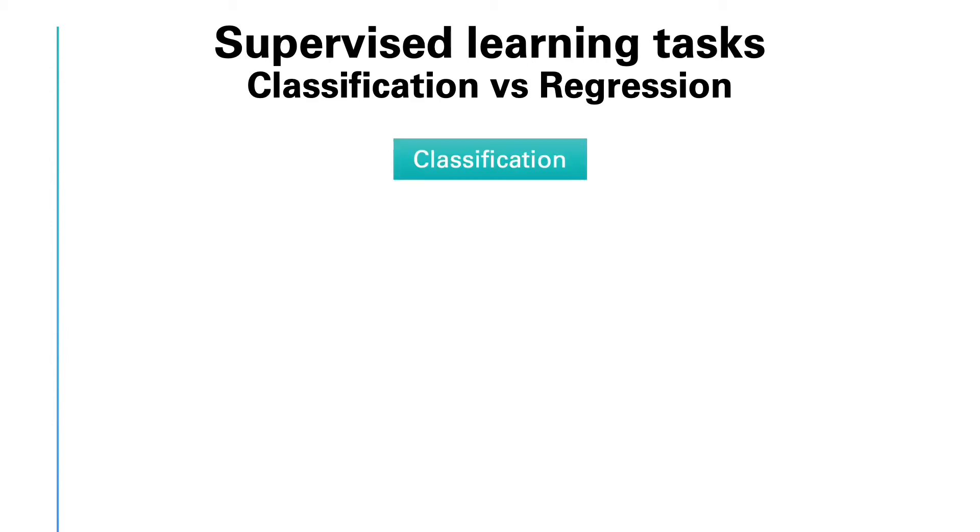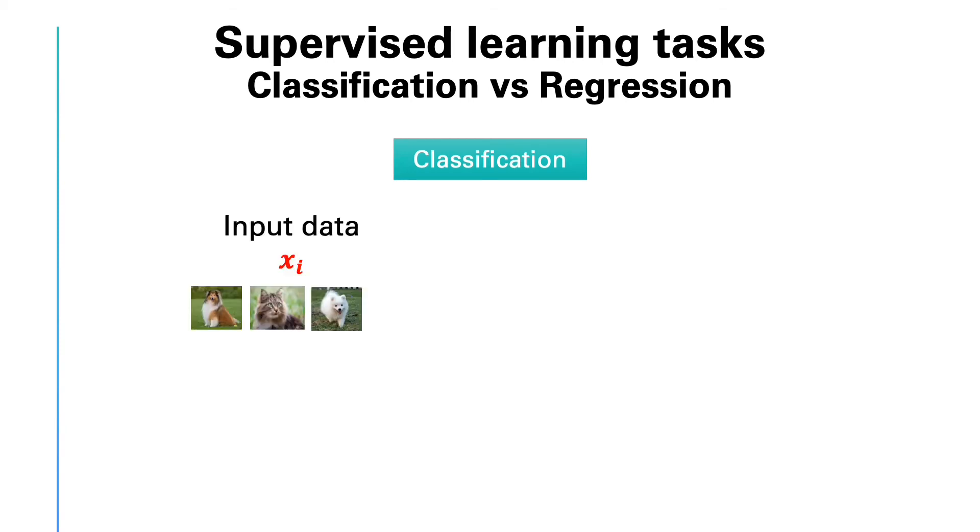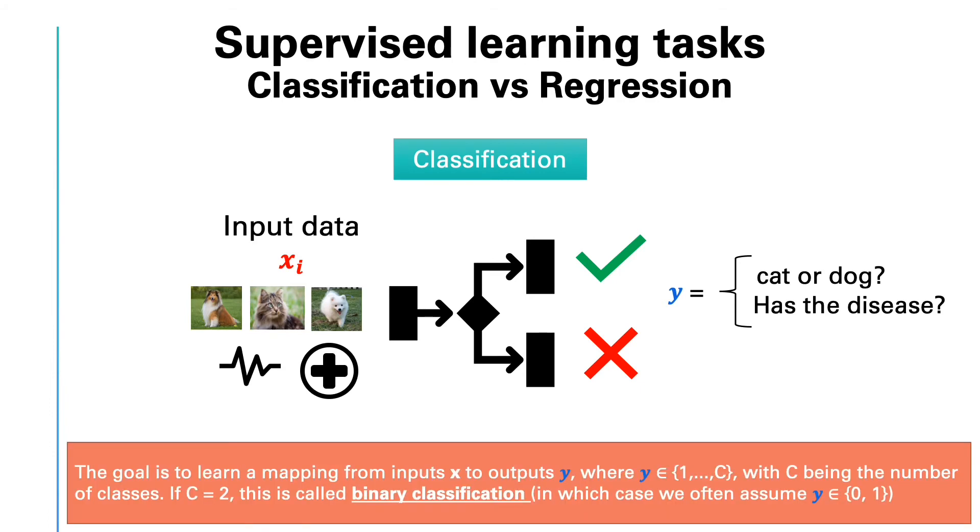In classification, as the name suggests, we want to predict the class of an input. For example, we would like to know whether an input image has a dog or a cat in it. Or we might want to know whether a patient has a disease or not. So we are classifying. We are putting the unknown value y into a category. In this set of tasks, the goal is to learn a mapping from input x to output y, where y could be one of C possible classes. In other words, y could be one, two, three, up to C, where C is the number of classes. If C is equal to two, this is called binary classification. In this case, we often assume y could be either zero or one, or we might say that y could be minus one or plus one.